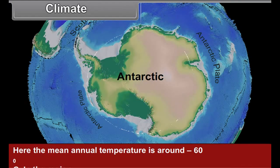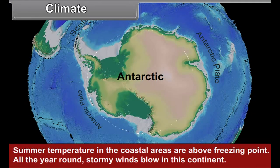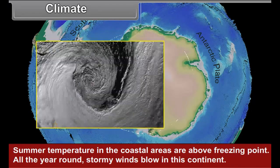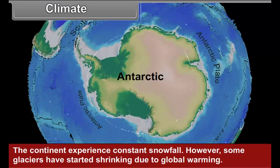In the region of the Antarctic Peninsula, the climate is comparatively warm. Summer temperatures in the coastal areas are above freezing point. All the year round, stormy winds blow in this continent. The continent experiences constant snowfall. However, some glaciers have started shrinking due to global warming.